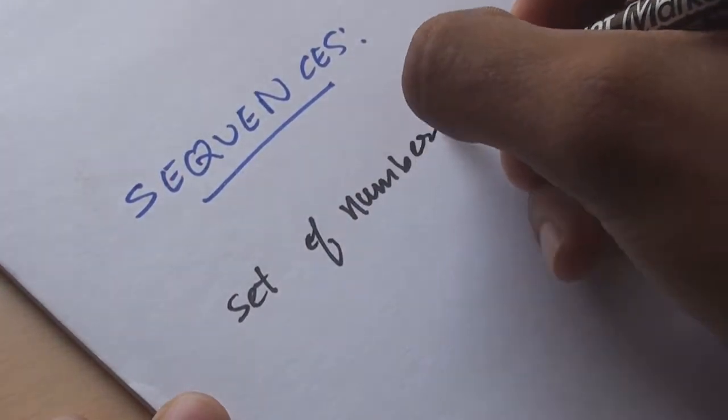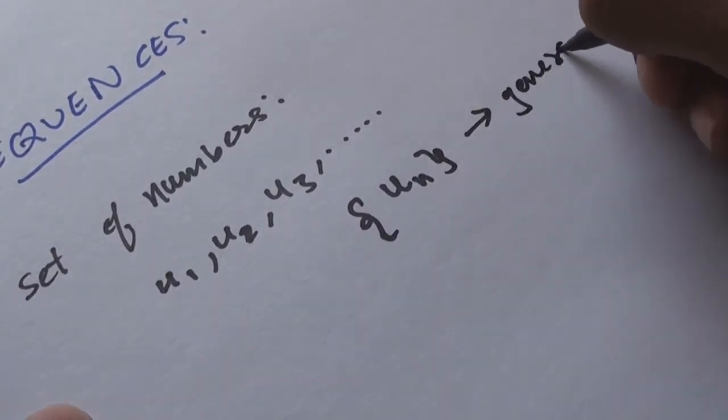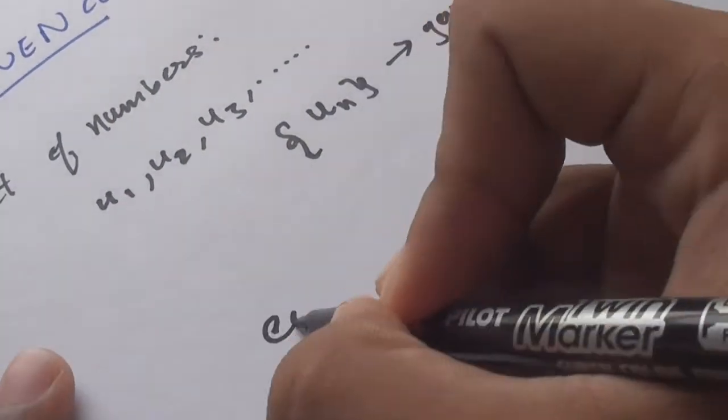Sequences: Sequences are an ordered set of numbers u1, u2, u3, and so on, denoted by curly brackets {un}, where un is the nth or the general term.